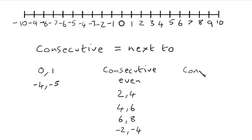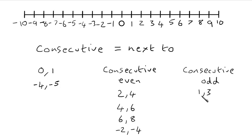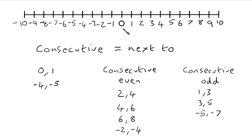Consecutive odd numbers work the same way. In the positive numbers we've got 1 and 3, 3 and 5, 5 and 7 — any of those pairs are consecutive odd numbers. And again, the negatives: negative 1 and negative 3, negative 3 and negative 5, negative 5 and negative 7 — all consecutive odd numbers. Note that 0 is neither even nor odd, so we wouldn't count that when asked to find consecutive even or consecutive odd numbers.